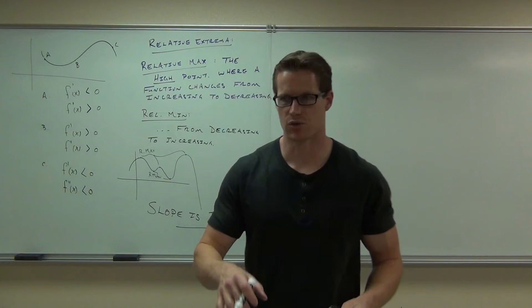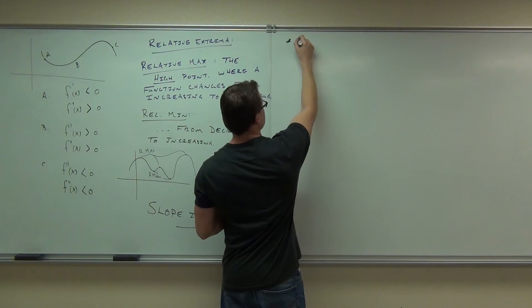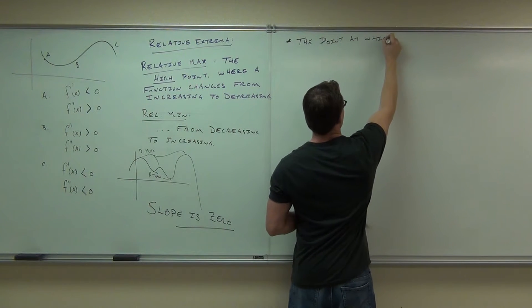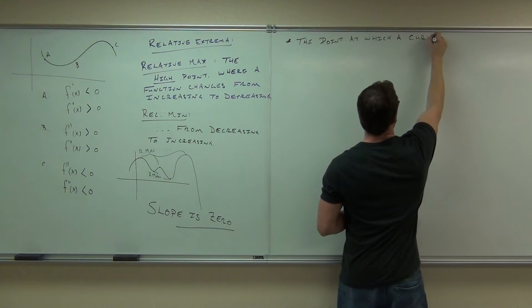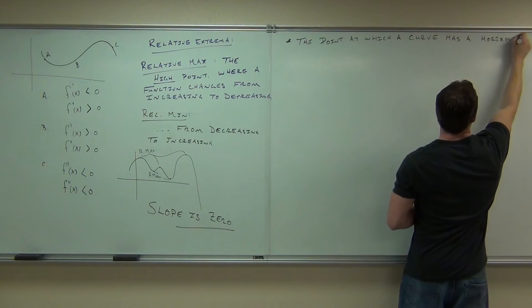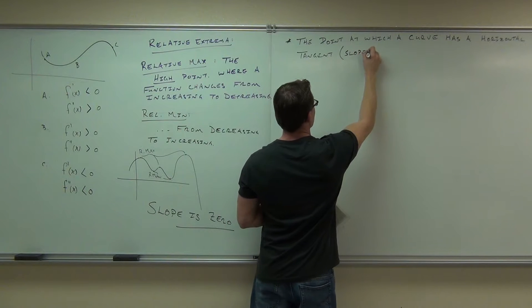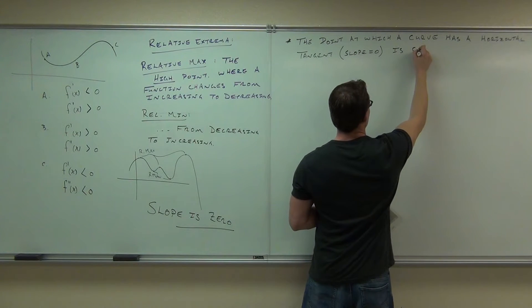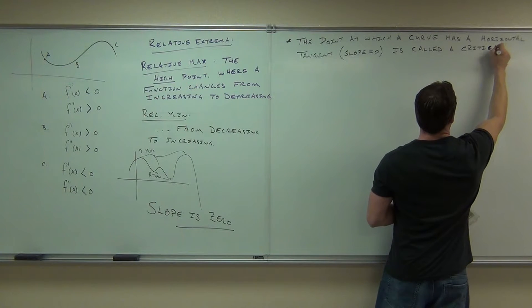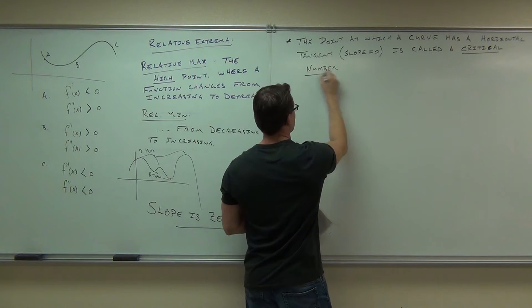The point at which a curve has a horizontal tangent, or in other words a slope of zero, is called a critical number or a critical point. That's the definition. It's called a critical number.